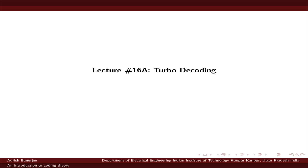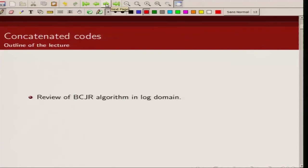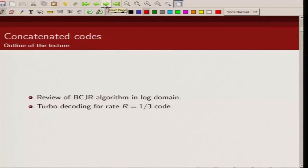Today we are going to discuss about decoding of turbo codes. To do that, we will first review our BCJR algorithm in the log domain. We have talked about BCJR algorithm in the probability domain. We will very quickly review the matrices that are updated in BCJR algorithm and how they are implemented in the log domain. And then we will talk about turbo decoding. We will take an example of a rate one-third code.